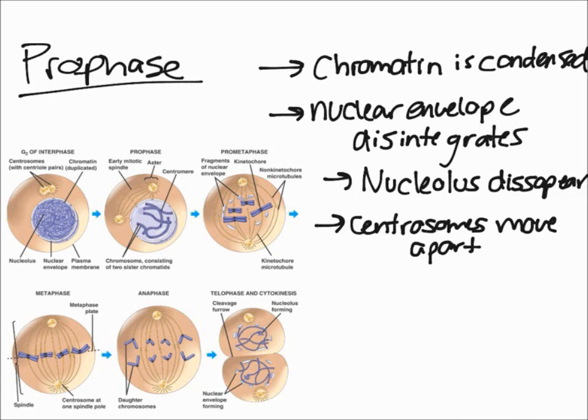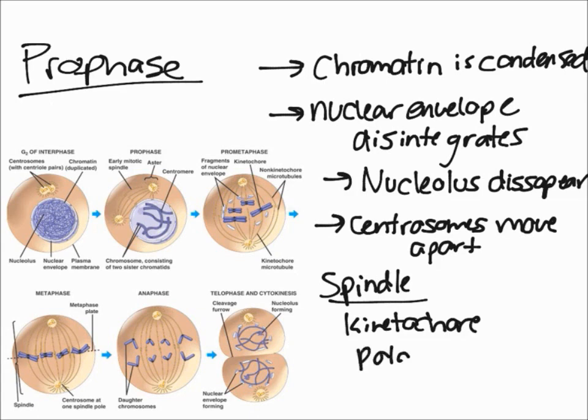There are three types of spindle fibers: kinetochores, polar fibers, and asters. One thing I forgot - prophase is the longest phase.